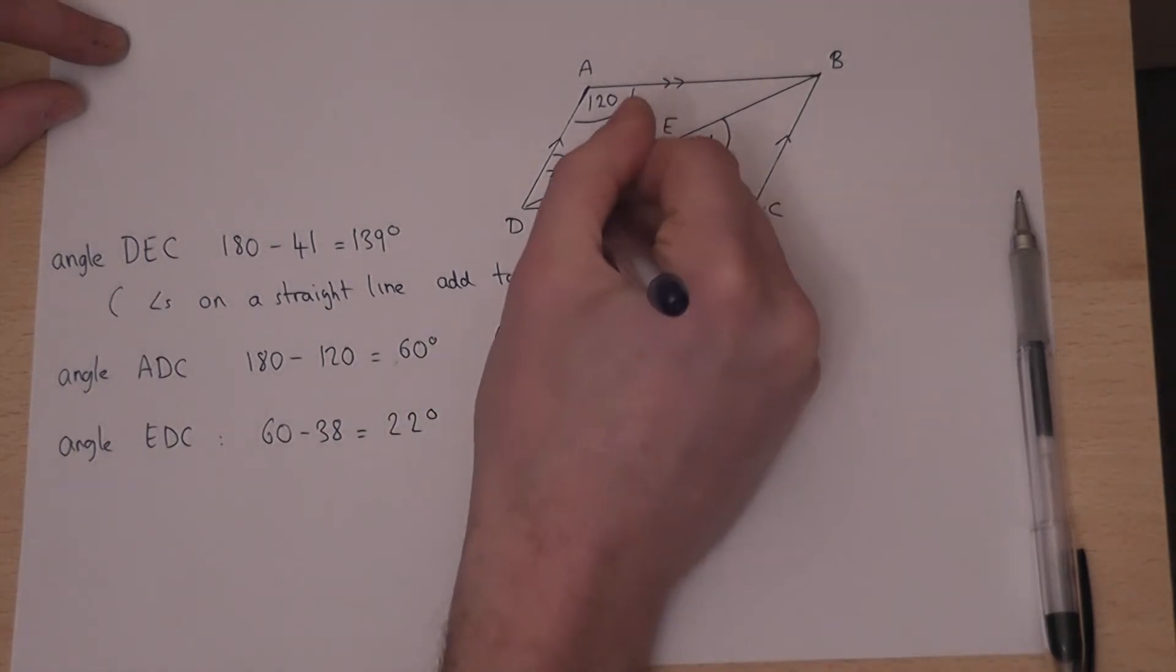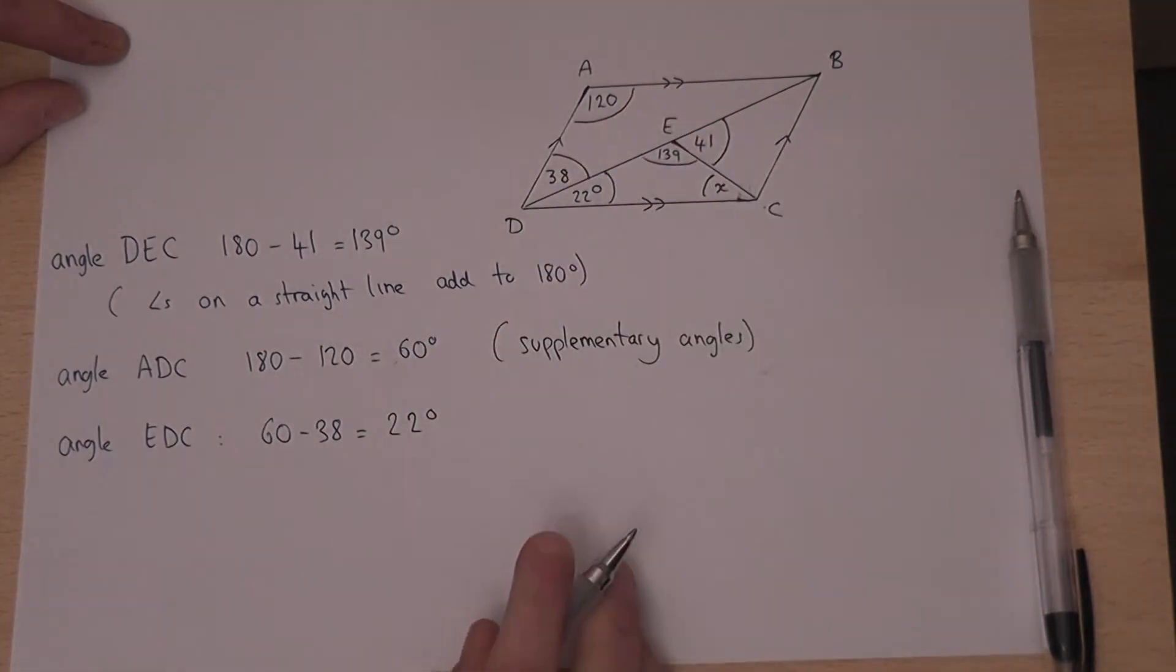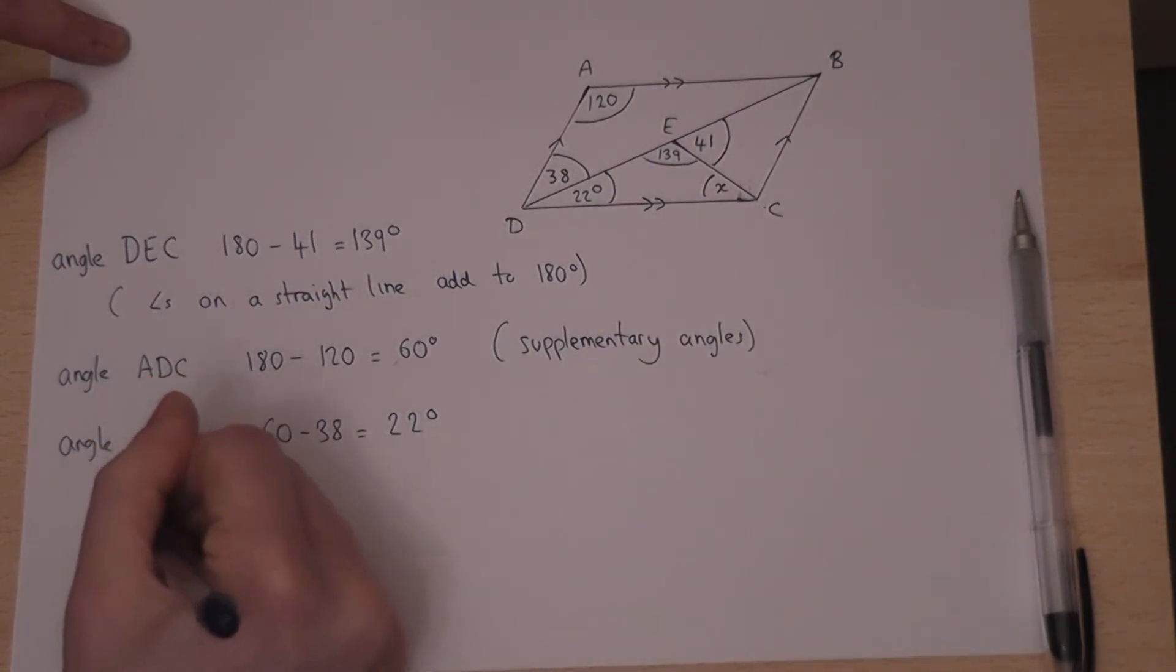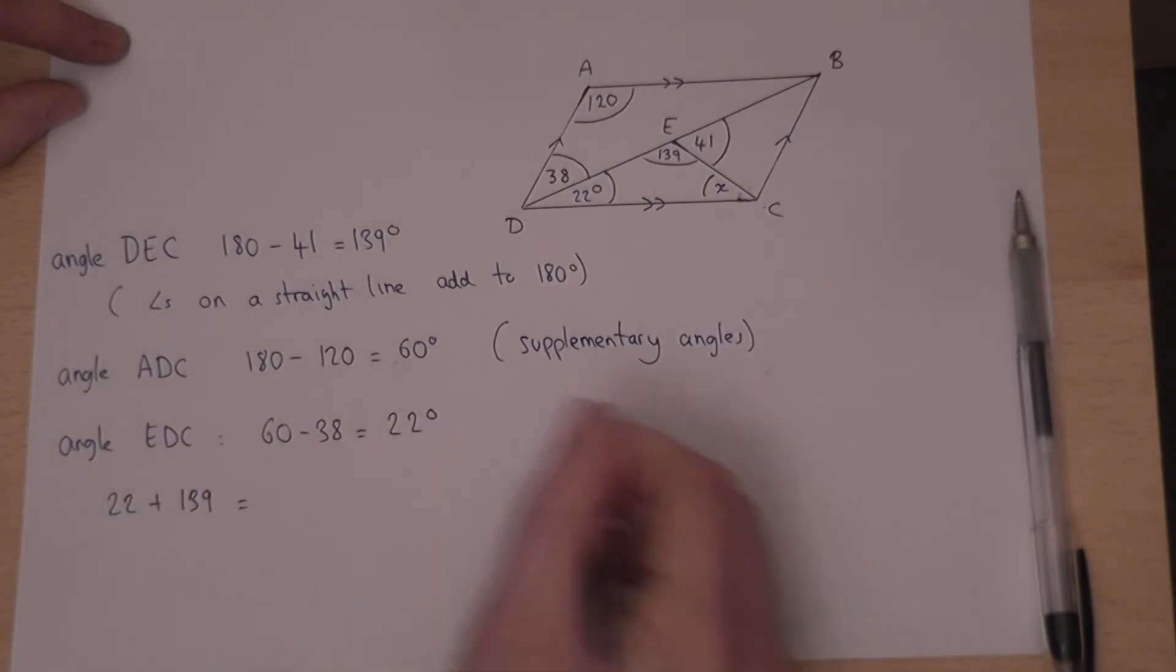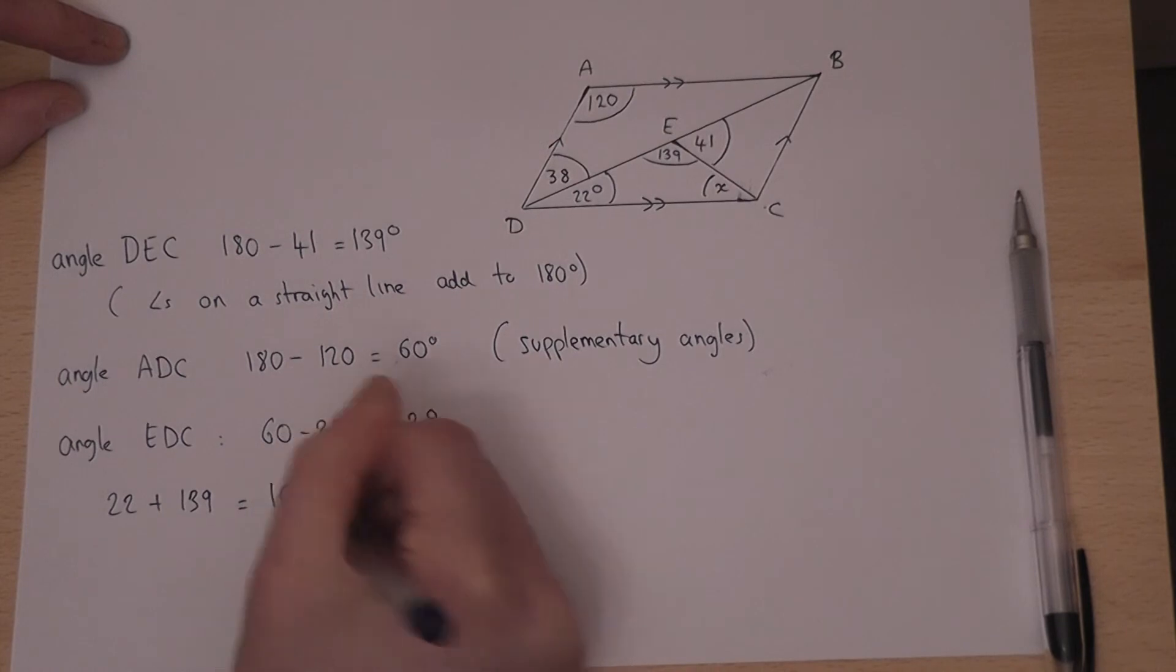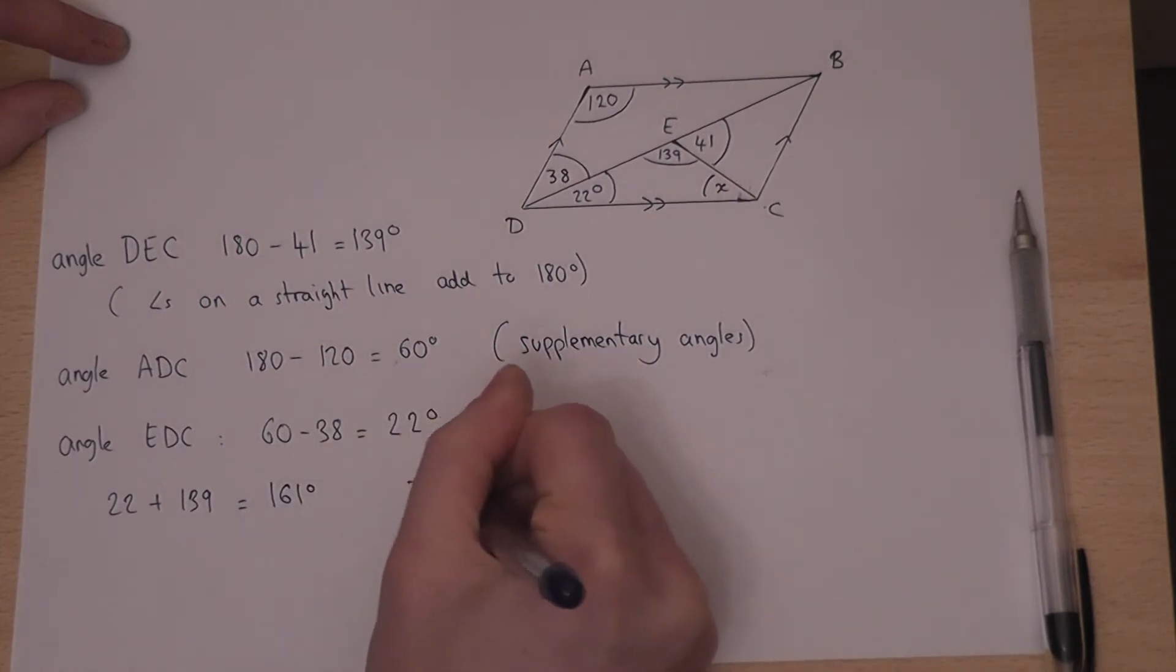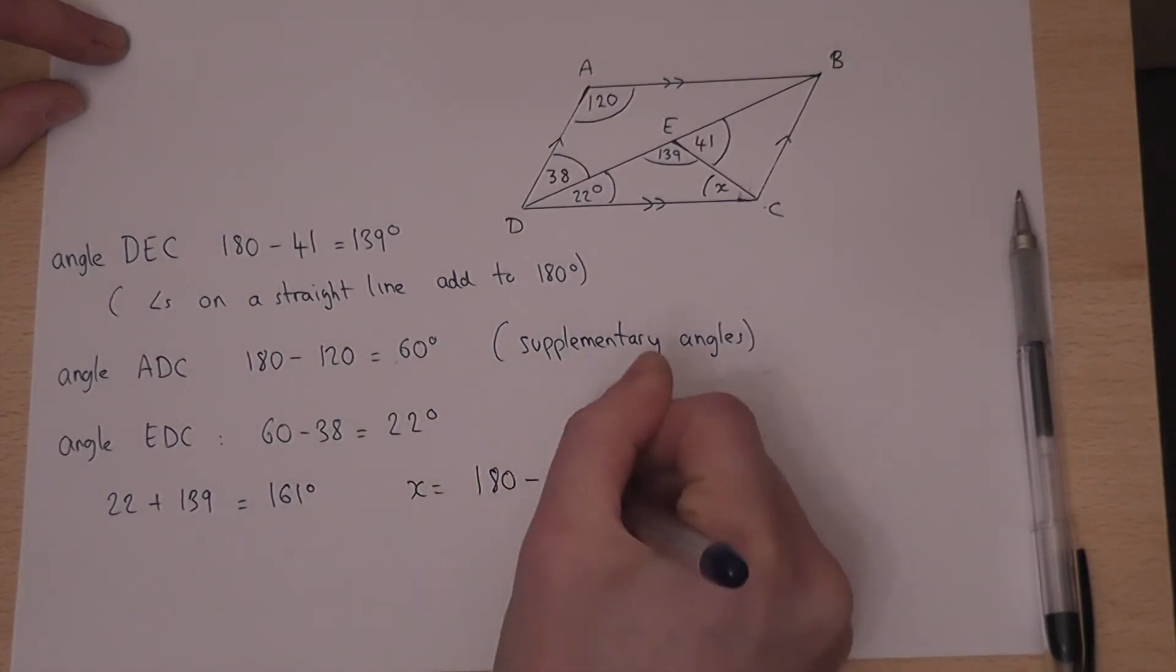So therefore, I've now found out that angle there. Then to find angle x, I will just do 22 plus 139, which is 161 degrees. Then angle x must be 180 take away 161, which is 19 degrees.